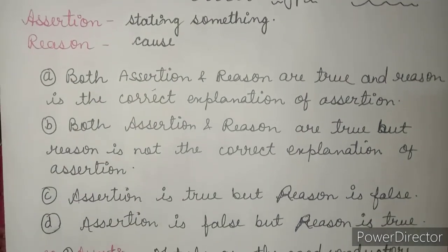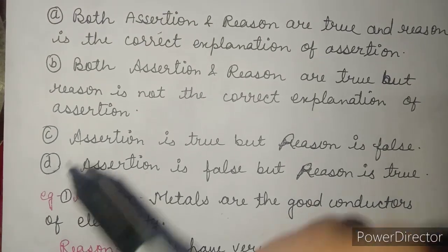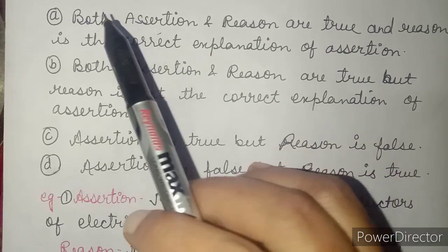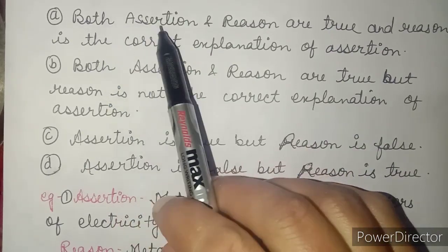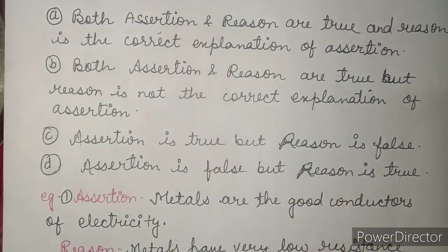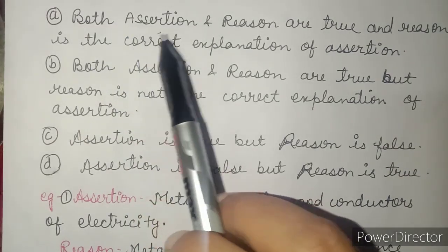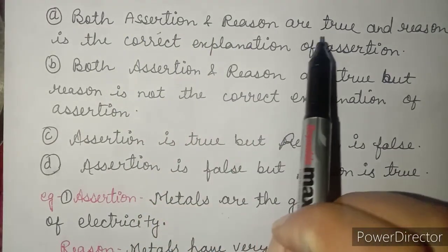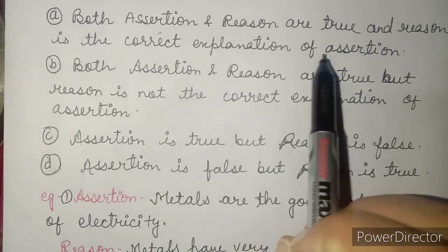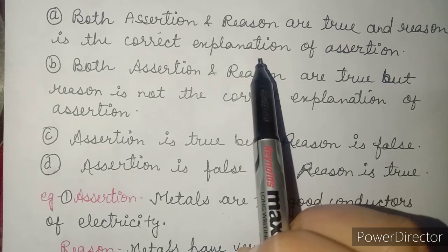In assertion and reason type questions, there are four options. The first option is: both assertion and reason are true, and reason is the correct explanation of assertion — meaning reason correctly describes the assertion.